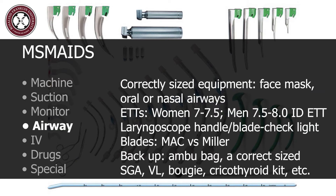Airway includes any equipment that can be used to ensure proper ventilation. The presence of correctly sized items must be confirmed. Examples of standard equipment include a face mask, oral or nasal airways, and endotracheal tubes. Size 7 to 7.5 internal diameter ETT is often chosen for women, and size 7.5 to 8 are often selected for men. However, it's important to opt for the most appropriate size for the patient based on their anatomy or specific considerations. A stylet should be inserted into the ETT. A 10 ml syringe should be attached to the pilot balloon. It's also necessary to prepare the laryngoscope handle and blade, as well as check light function. MAC or Miller blades are two popular options, and the one chosen should be based on the patient's need and provider's level of comfort.